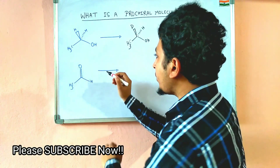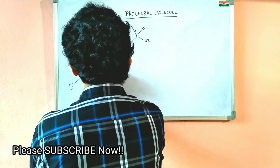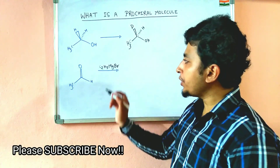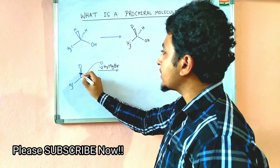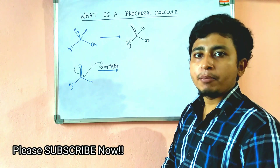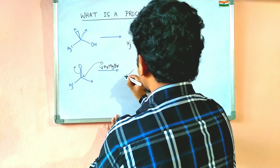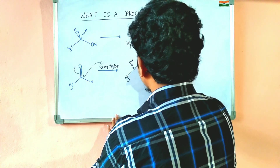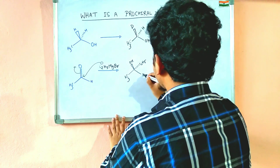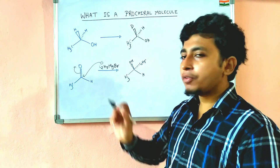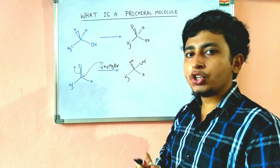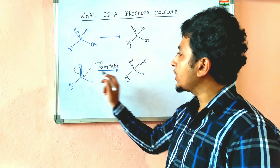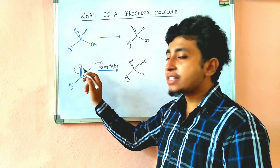Here we also have a ketone. If you add Ethyl Magnesium Bromide (EtMgBr) to this ketone, the C2H5⁻ can react with the carbonyl group and form a molecule which is chiral. The attack may also occur from the different side, giving another enantiomer. So in a single step we can convert this ketone into a chiral molecule, and hence it is an example of a Prochiral Molecule.